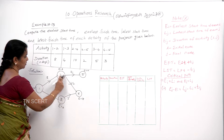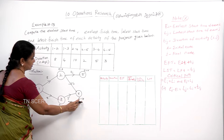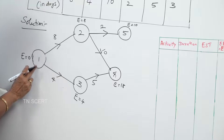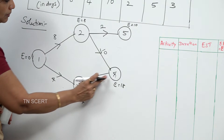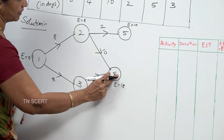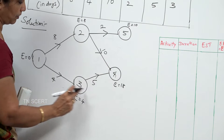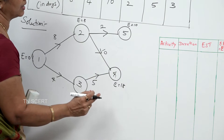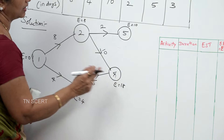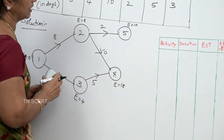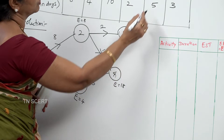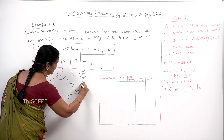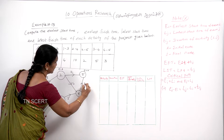For activity 3 to 4, here is 4 plus 5. Now 4 plus 5 is 9. Which is greater — 9 or 18? 18 is greater. That's why 18 is greater. Next, let's go to activity 4 to 5. The duration for 4 to 5 is 3 days.